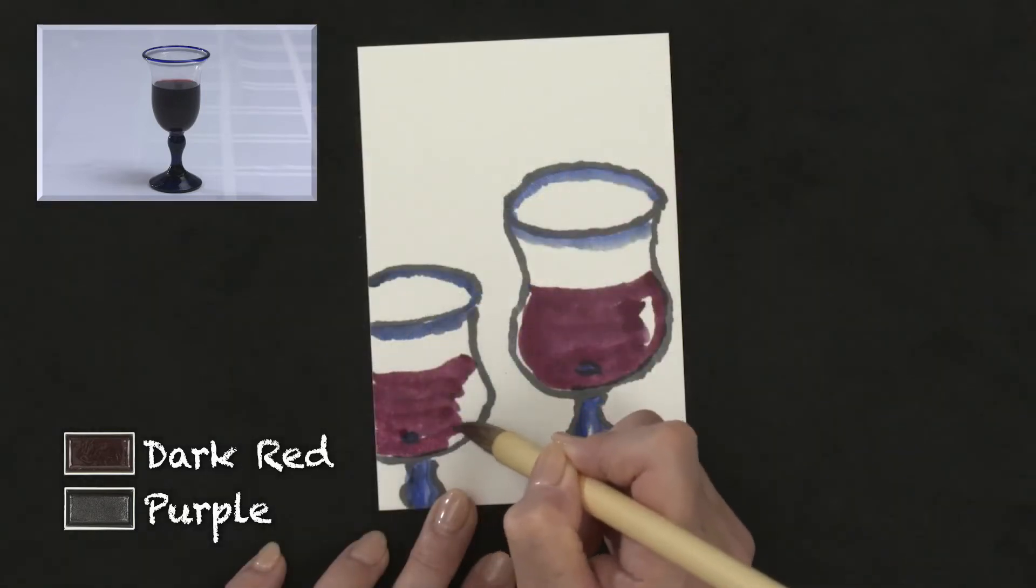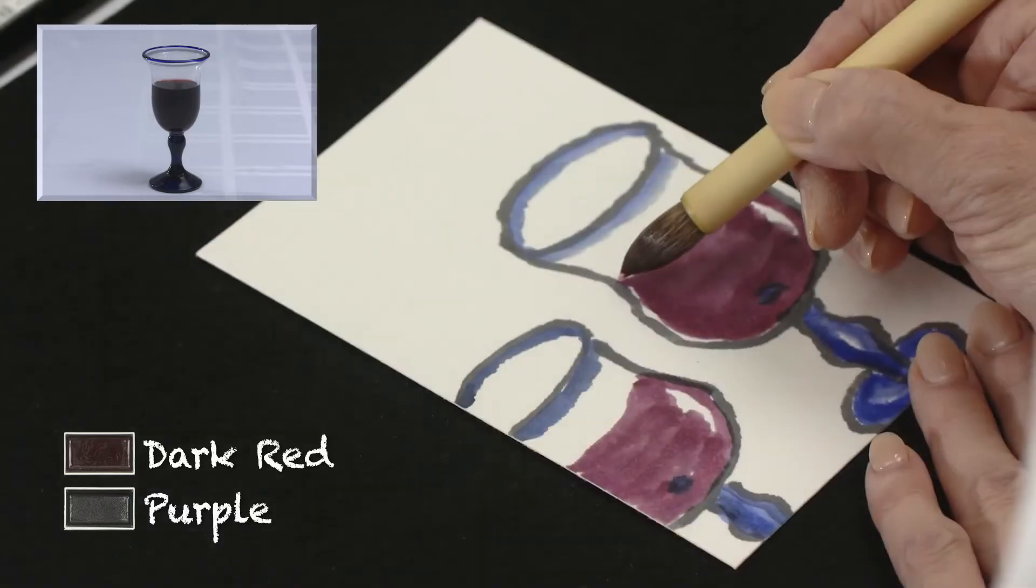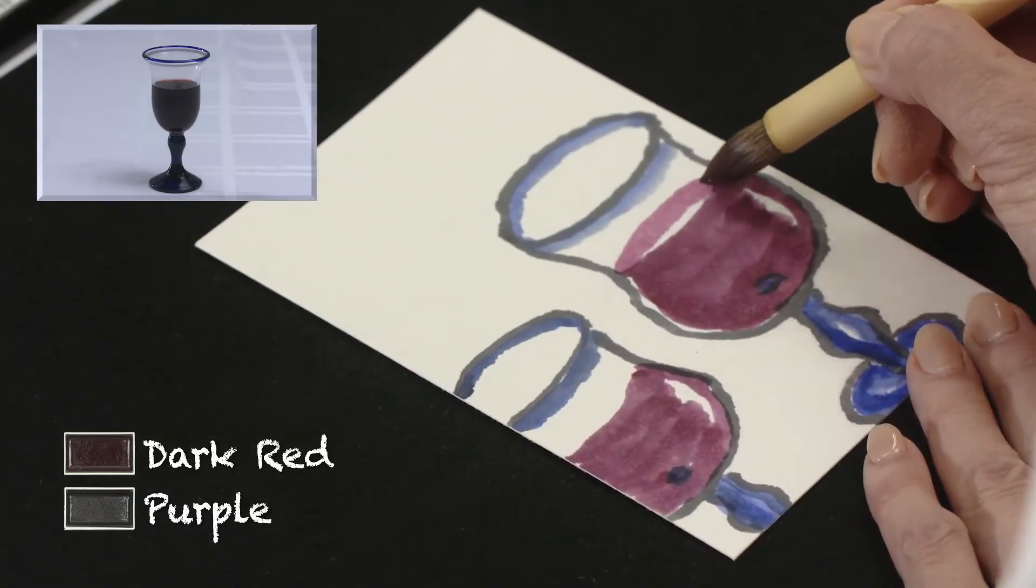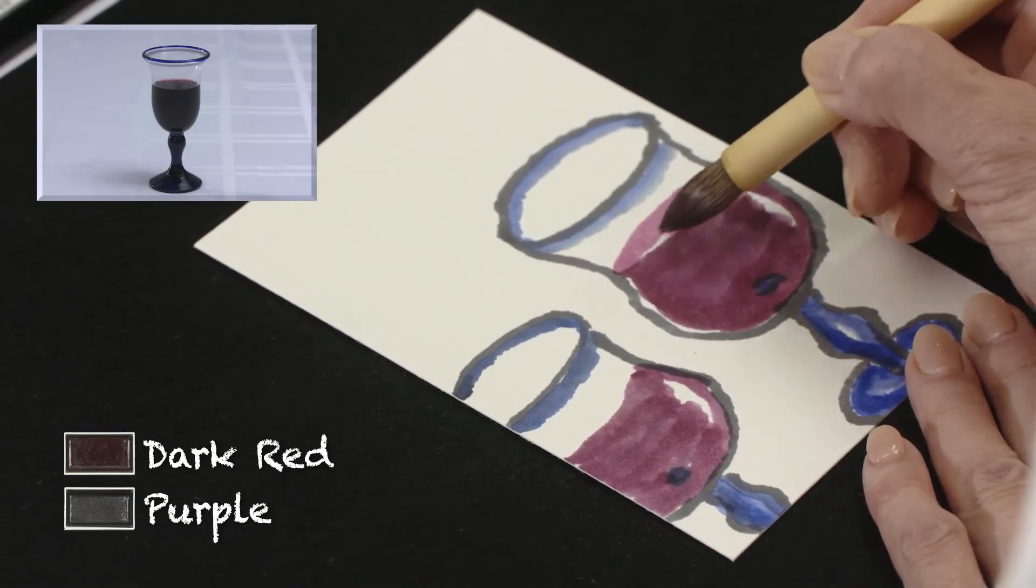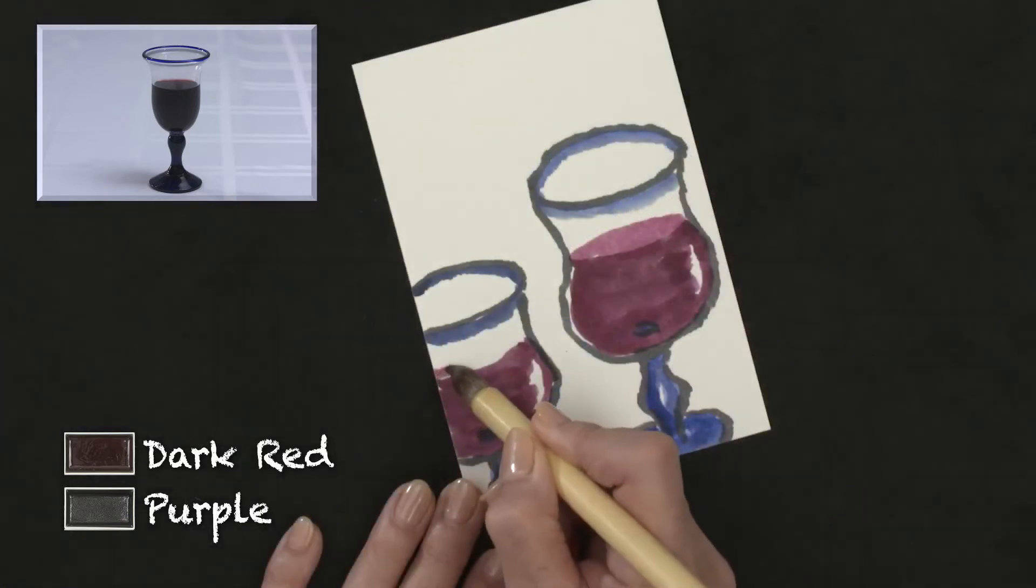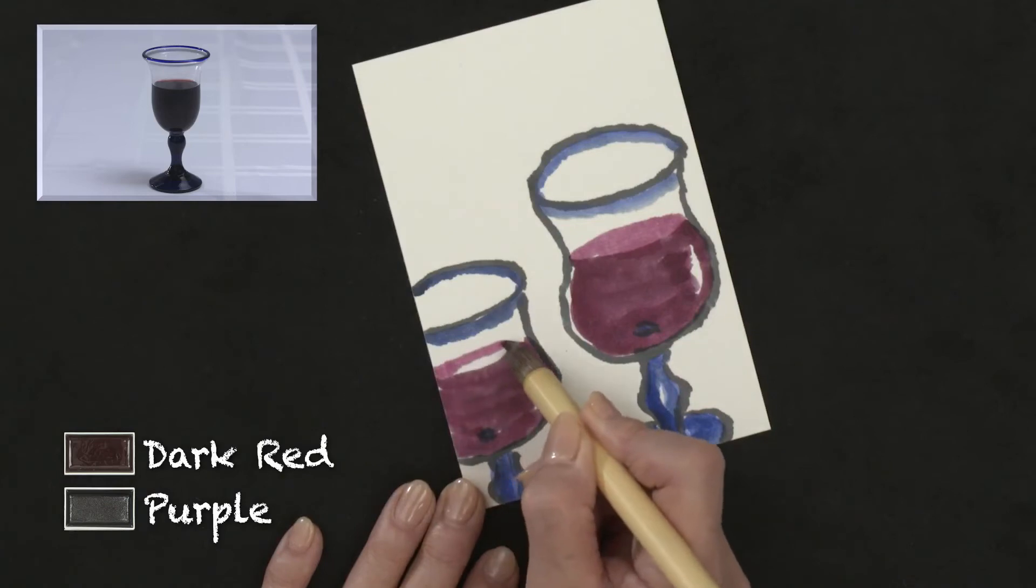The parts that are left white will give a three-dimensional look. Add water to the previous mix of dark red and purple to make a light wine color and color the surface of the wine.